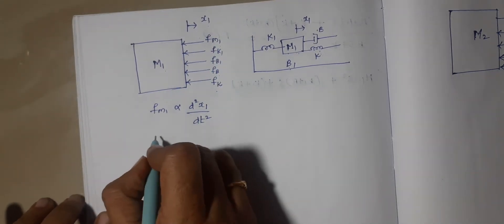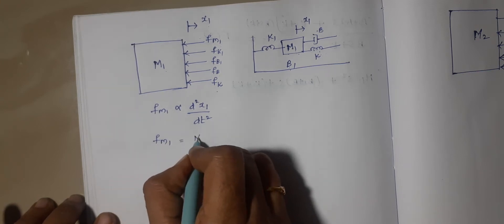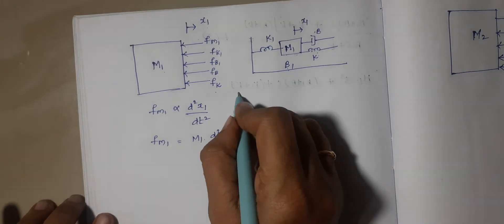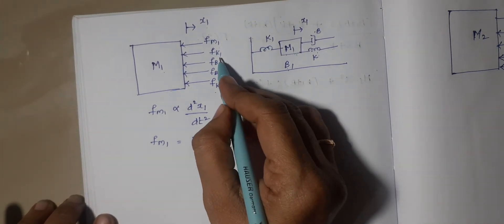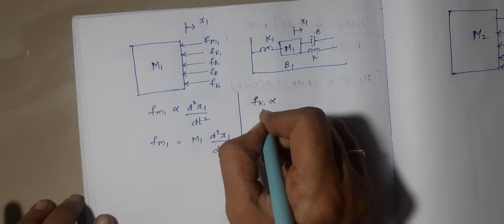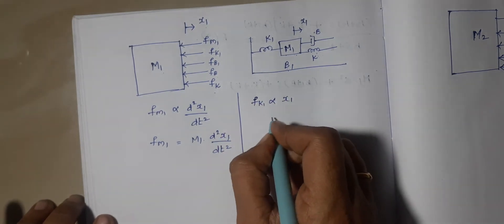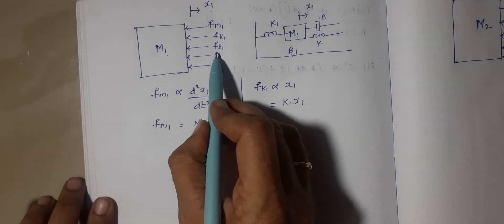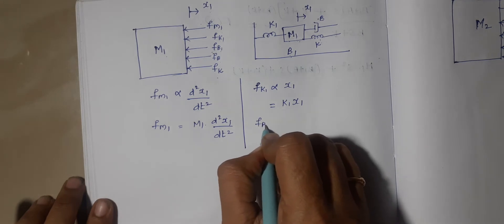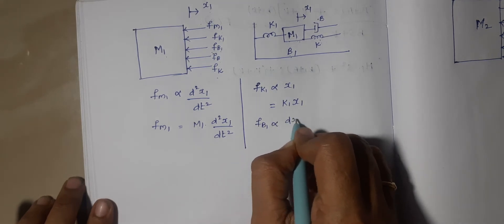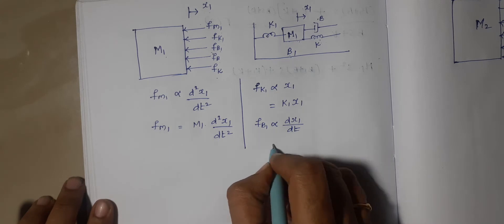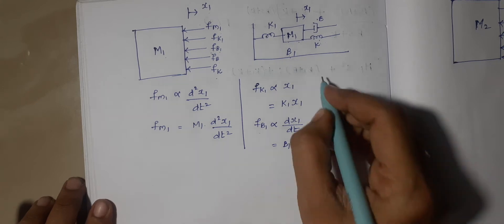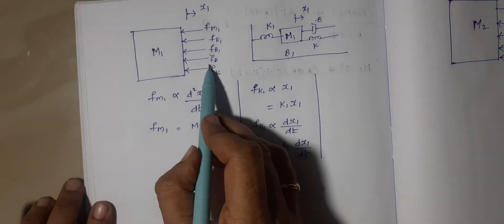Now I am going to write the expression for each term. fm1 is directly proportional to the displacement, that is d²x1/dt², and the displacement of mass m1 is x1. When we include the proportionality constant, this becomes m1·(d²x1/dt²). Next, fk1 is directly proportional to x1, so with the proportionality constant it becomes k1·x1. And fb1 is directly proportional to dx1/dt, so it becomes b1·(dx1/dt).